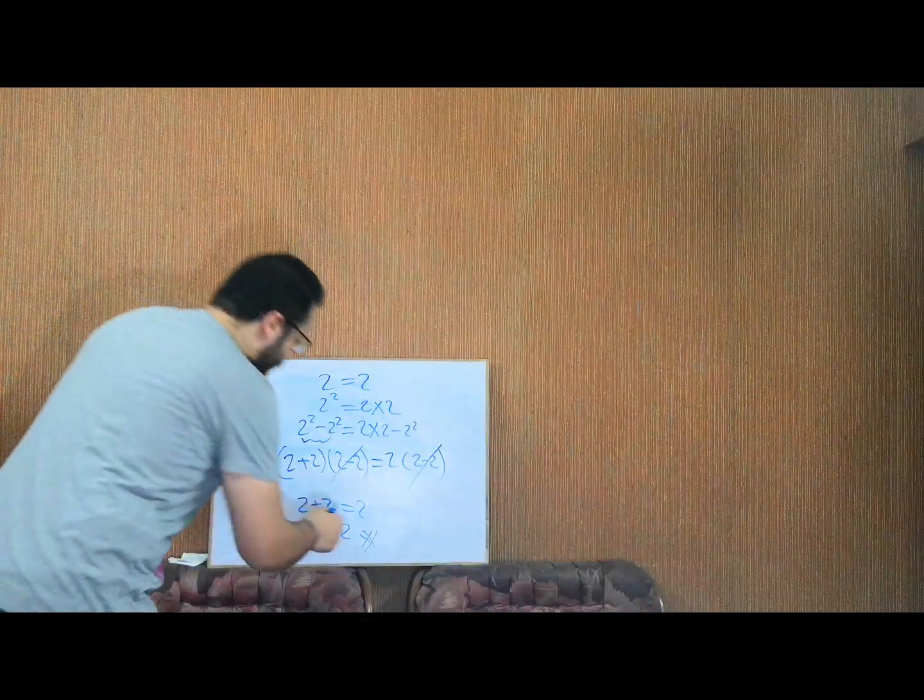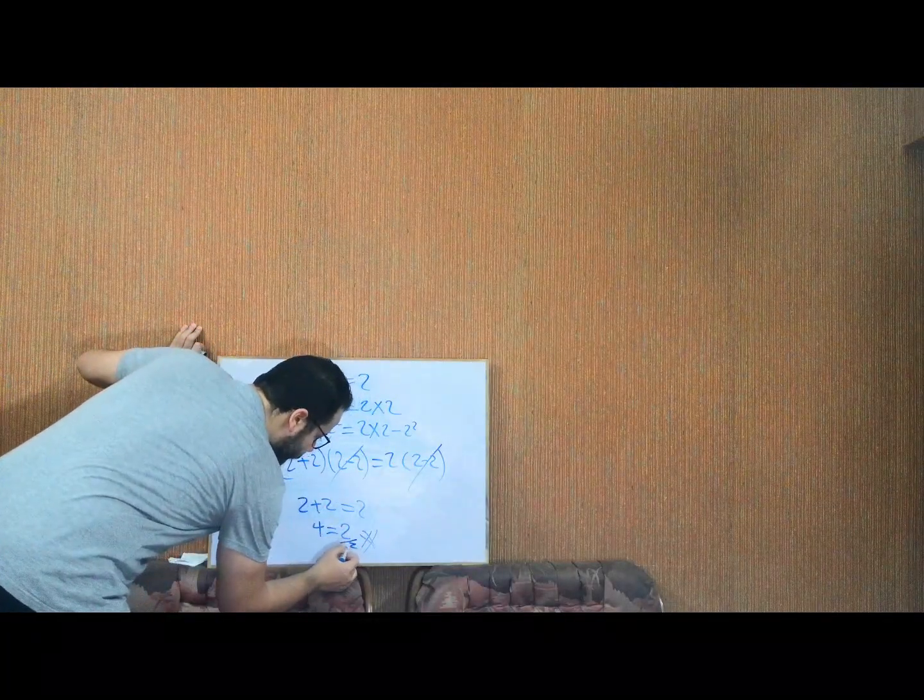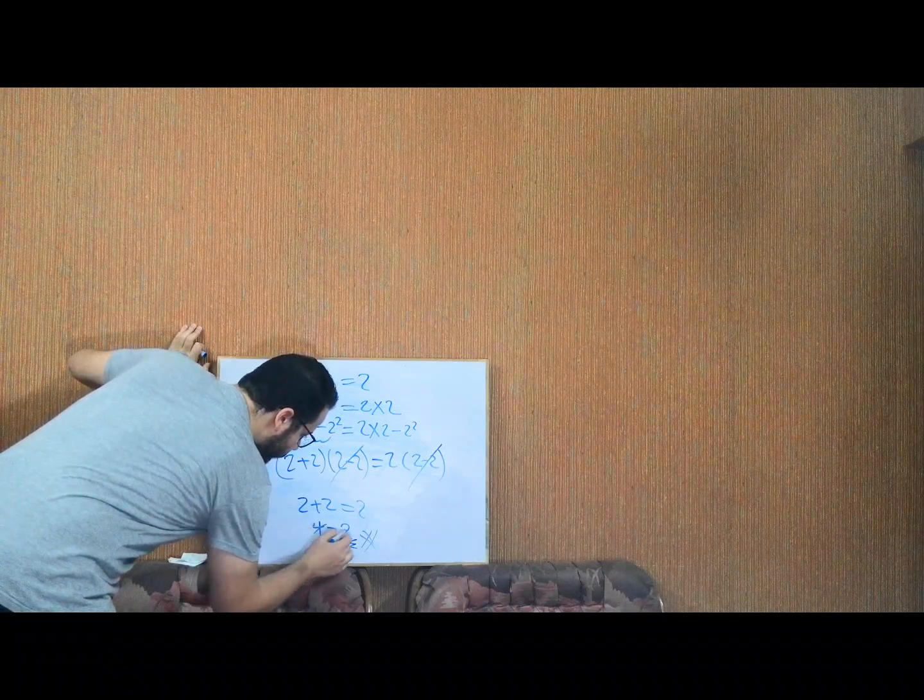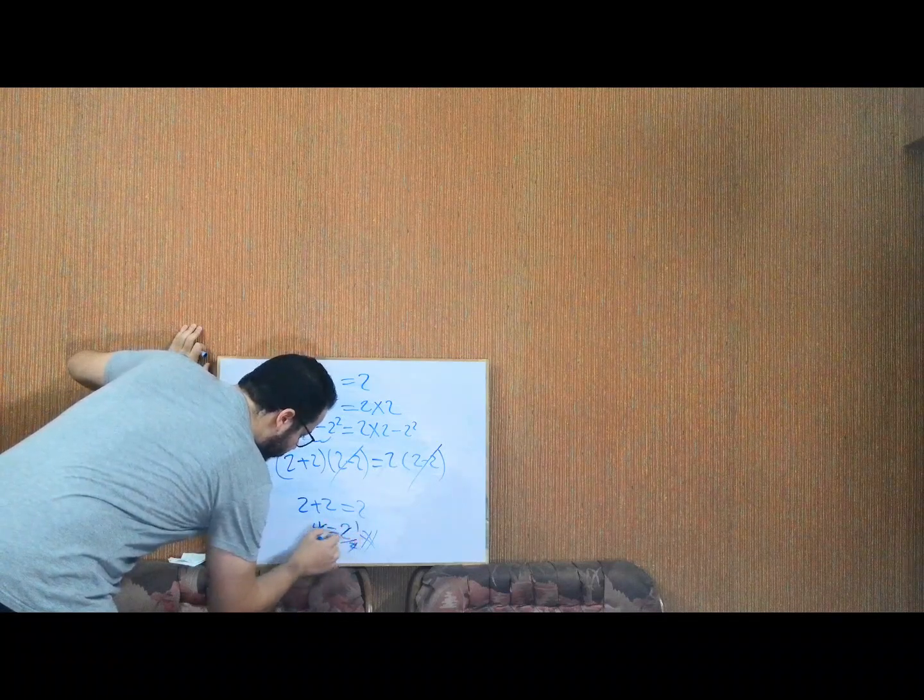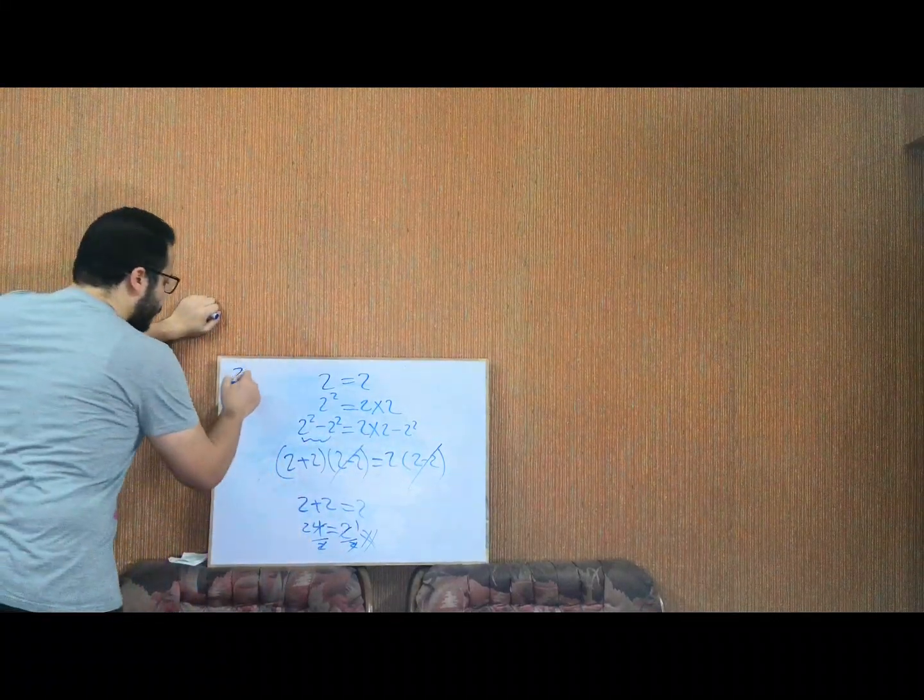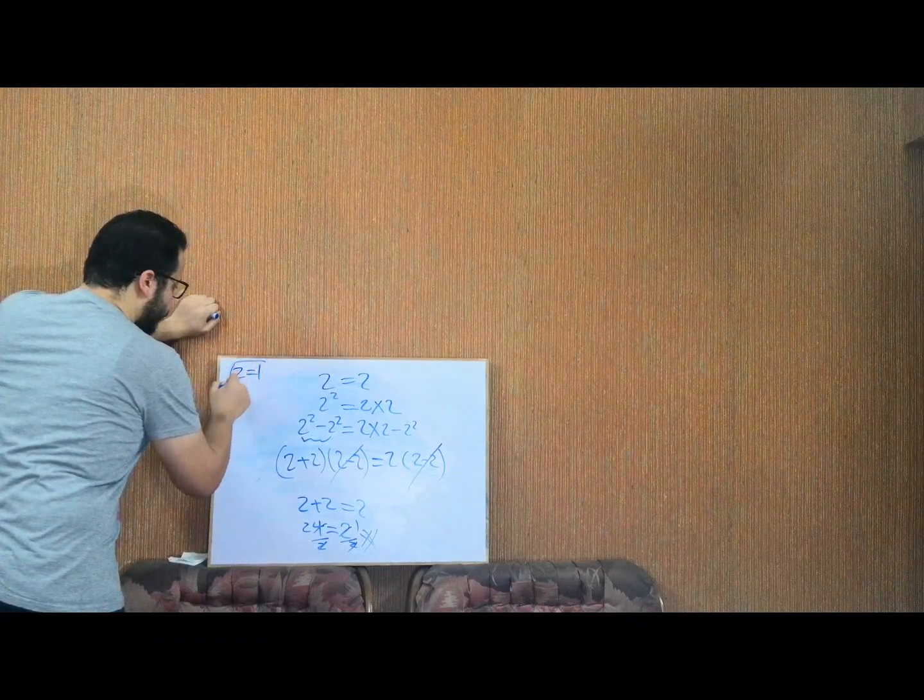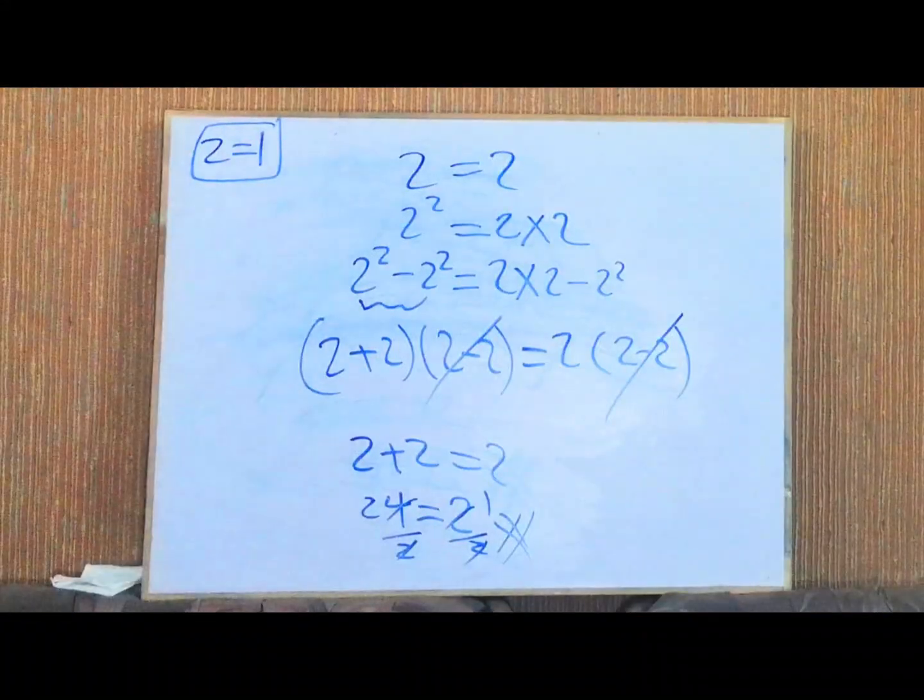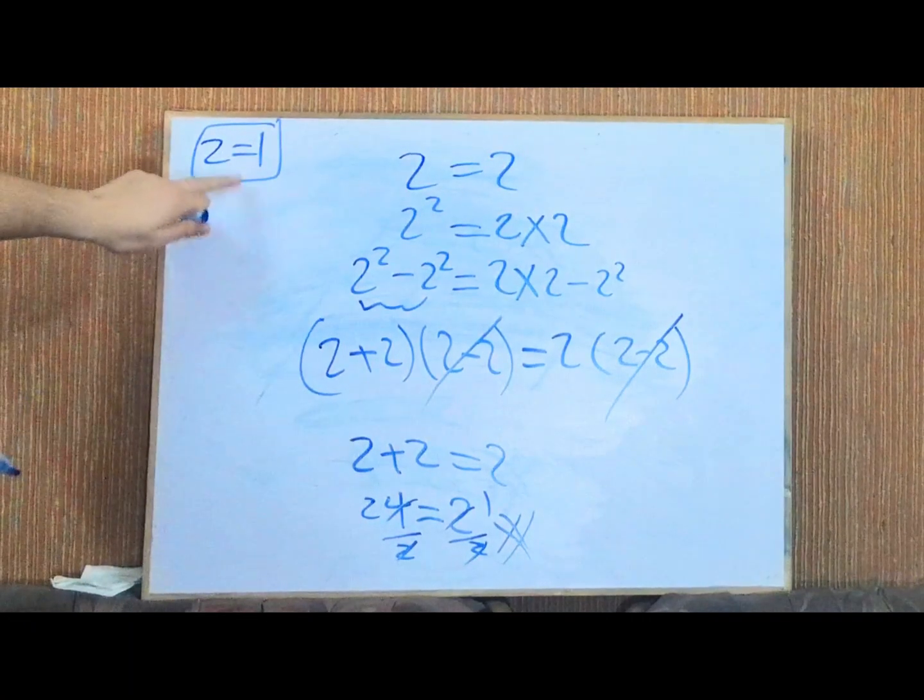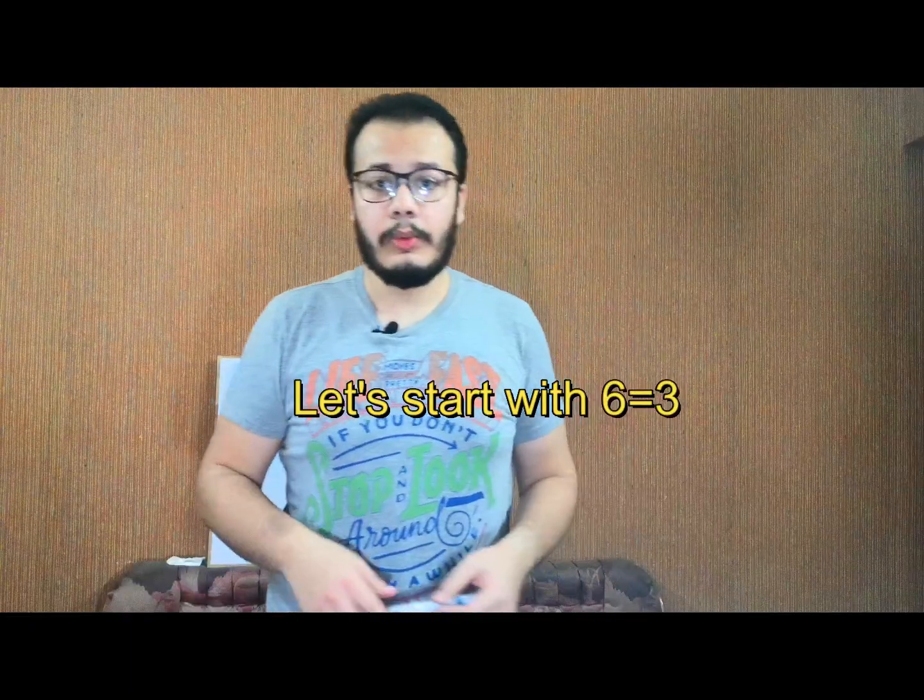If we divide: 4 over 2 equals 2, and 2 over 2 equals 1. That means 2 is actually equal to 1. Remember this because it's very important. I will tell you why at the end of this video.